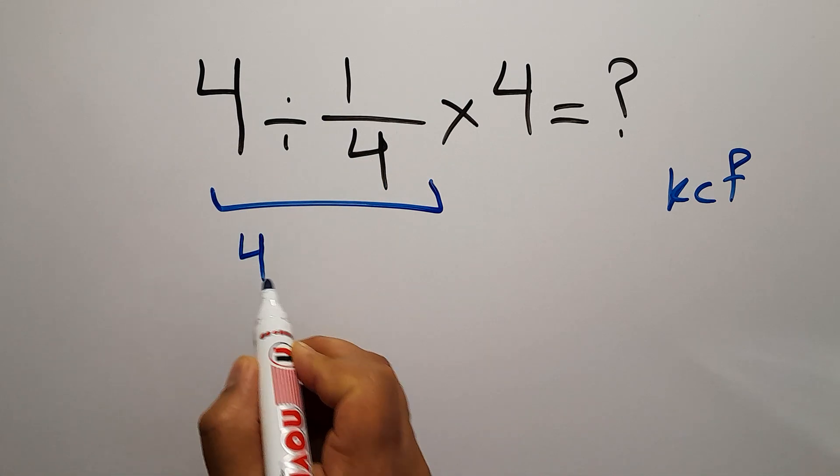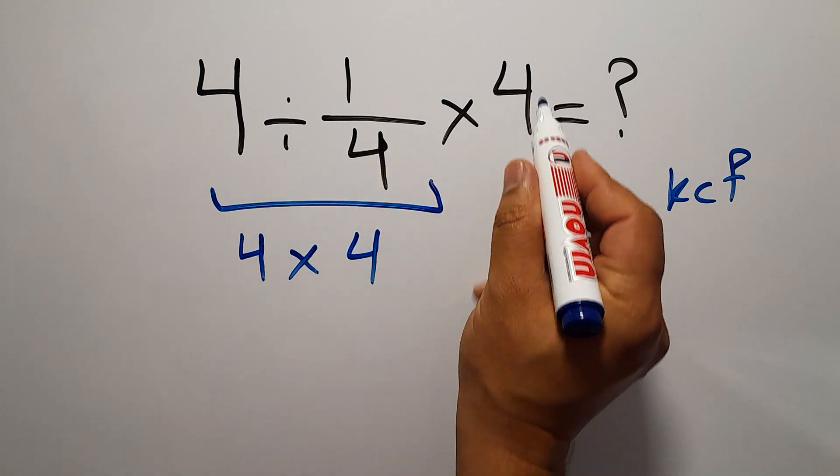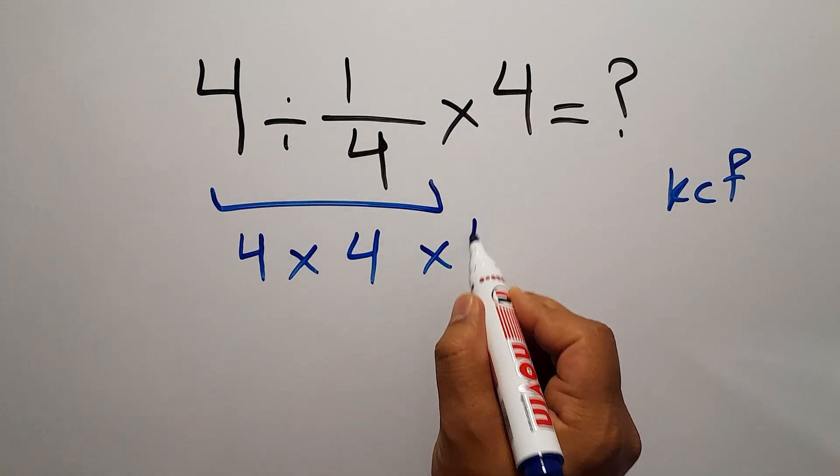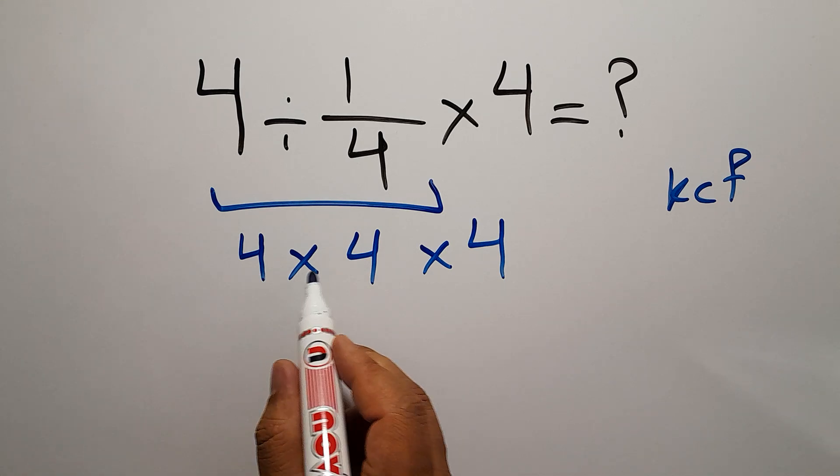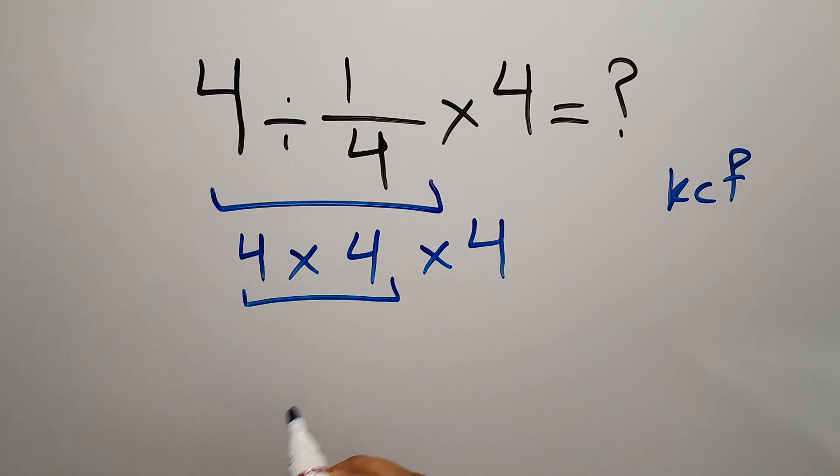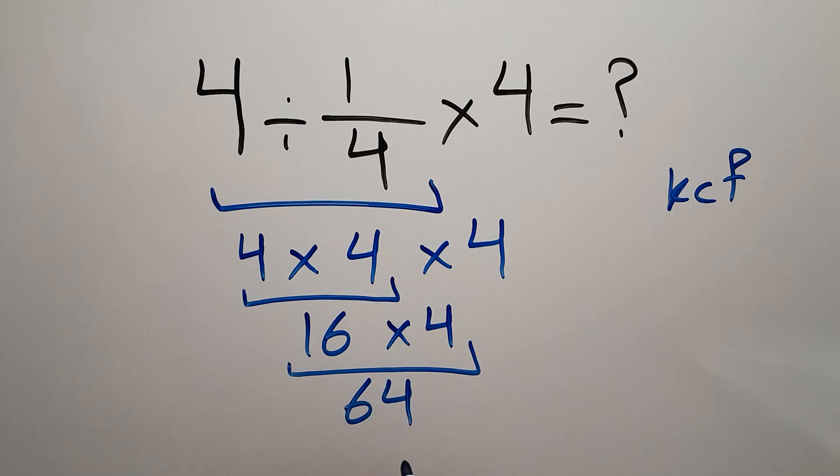So we can write 4 times 4, and again we have times 4. 4 times 4 gives us 16, and 16 times 4 equals 64. Therefore, our final answer to this problem is 64.